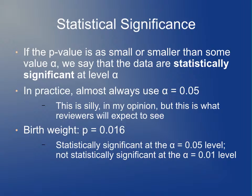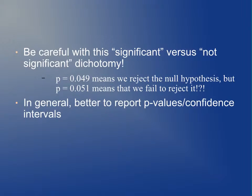In the birth weight example, we got a p-value of 0.016, so it would be statistically significant at the alpha equals 0.05 level but not at the 0.01 level. To illustrate why this paradigm is problematic: one experiment gives a p-value of 0.049, another gives 0.051. These are almost certainly within the margin of error of one another, yet scientific dogma says the first result means there is a true difference while the latter means there isn't — which to me is a little crazy. I advocate reporting p-values and confidence intervals to give readers a sense of the true strength of the association, rather than getting hung up on a significant versus not significant dichotomy.